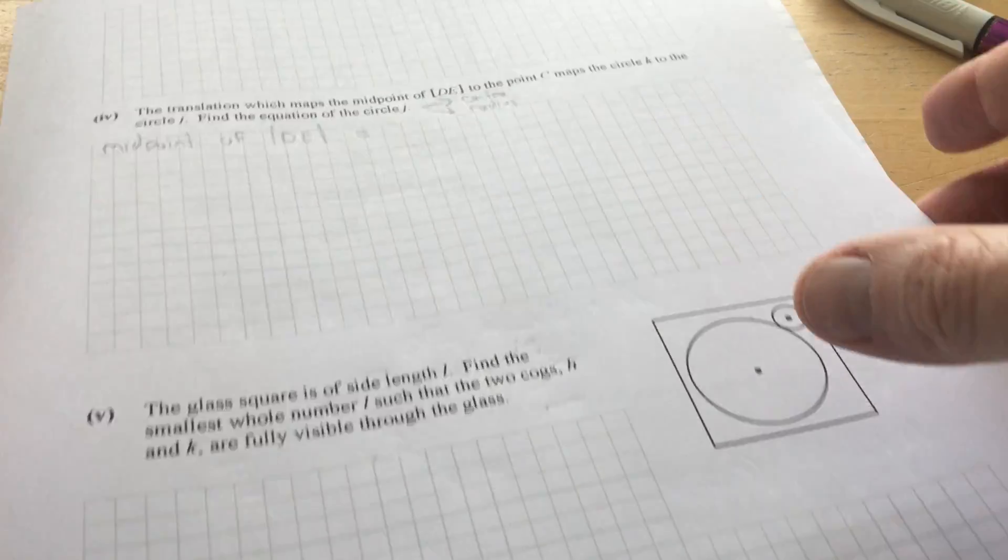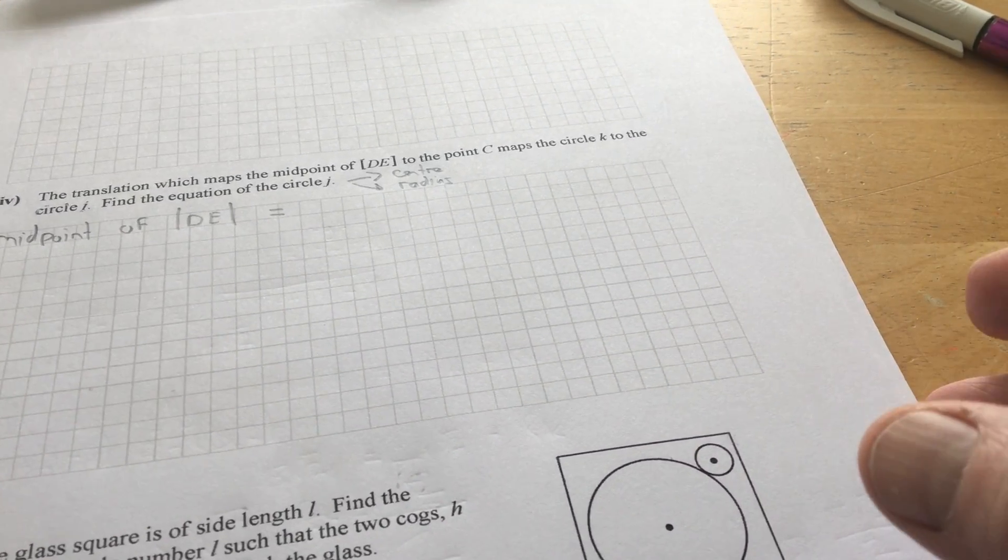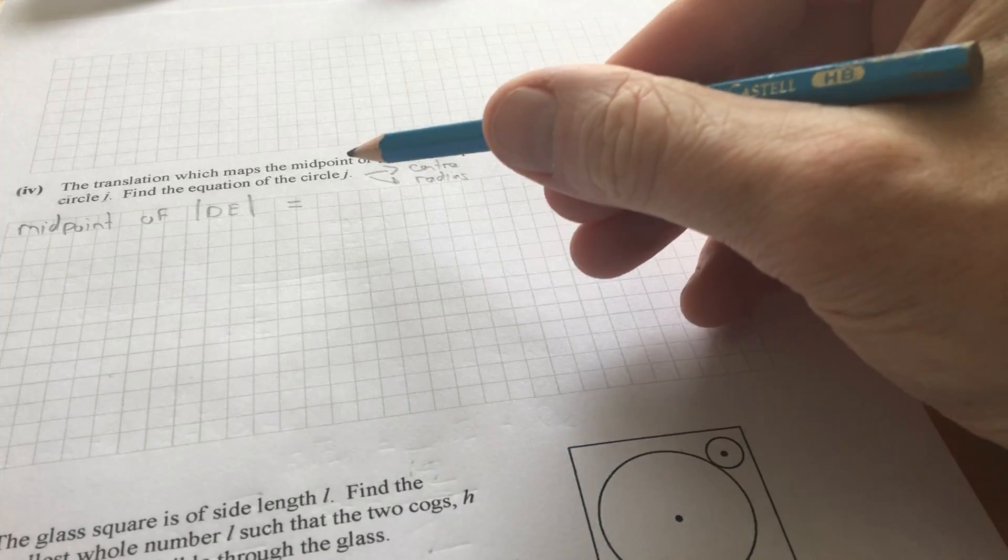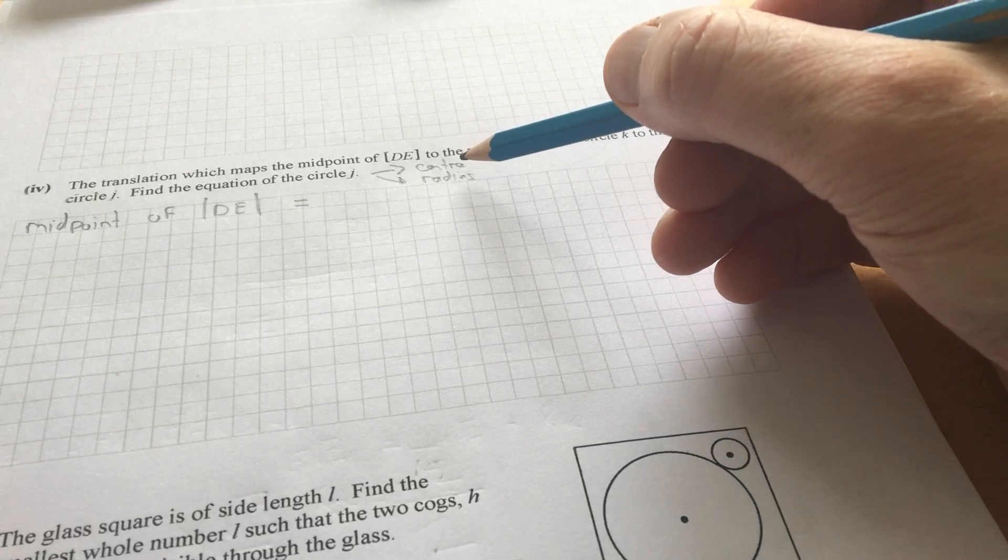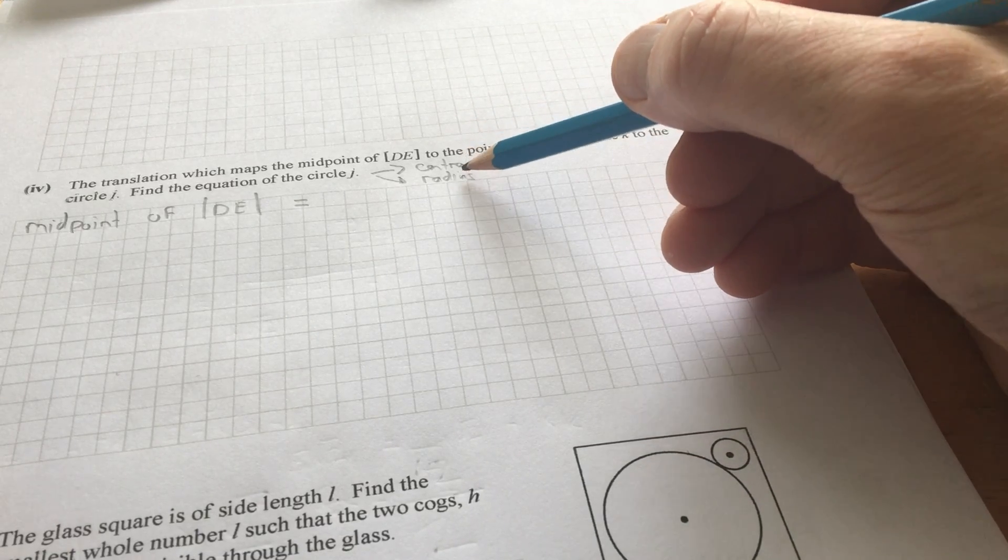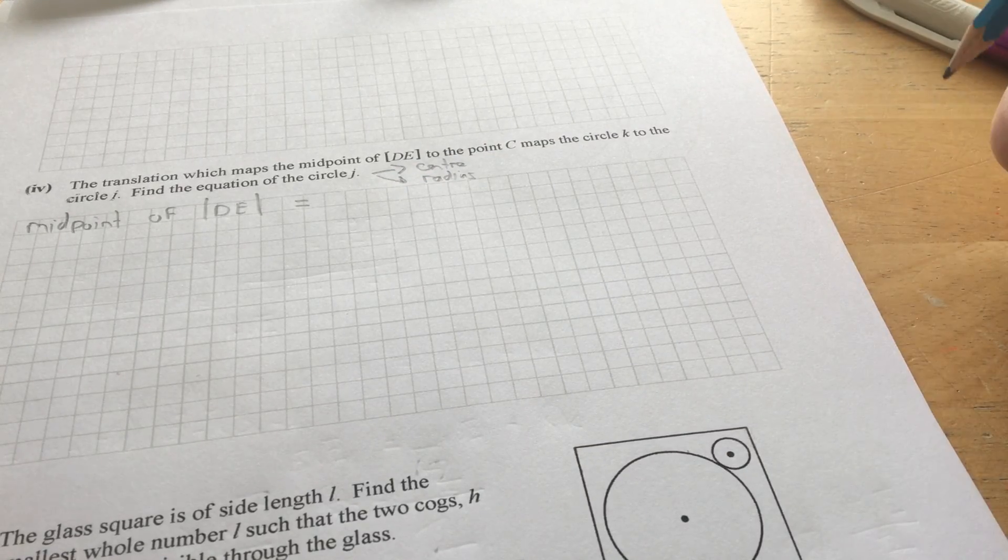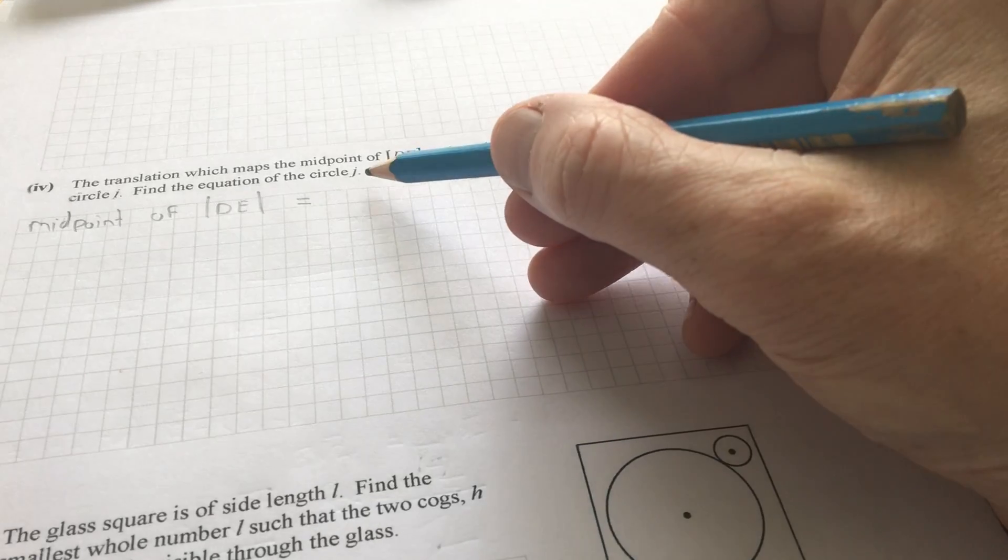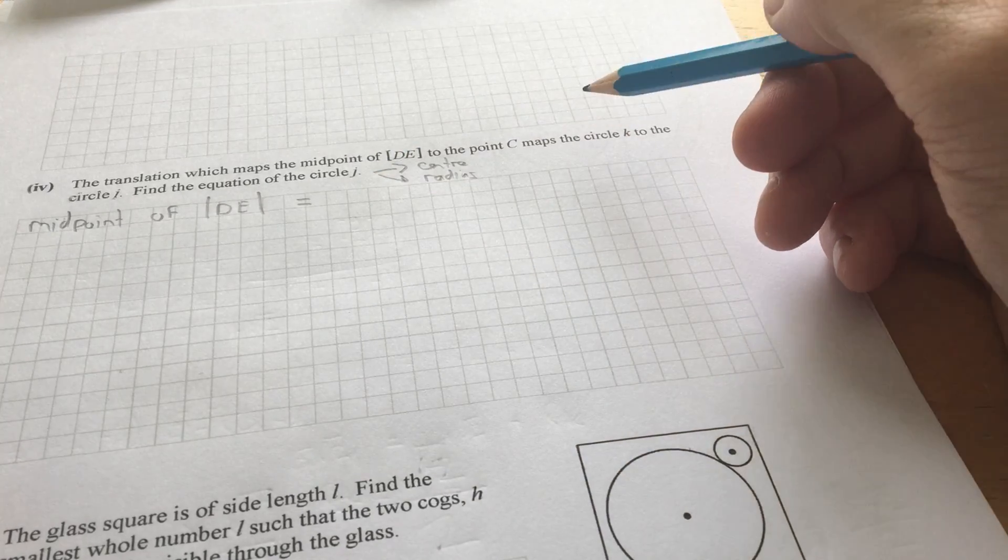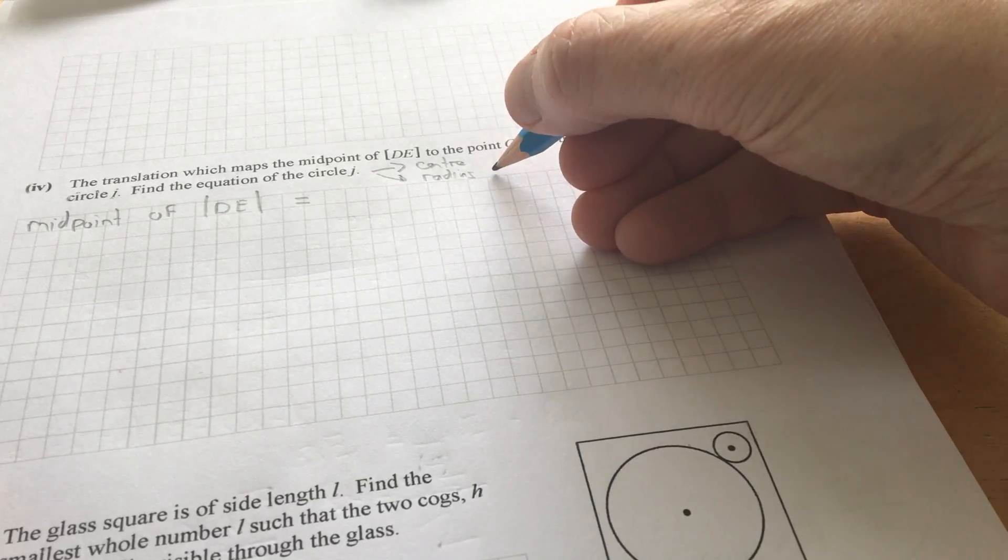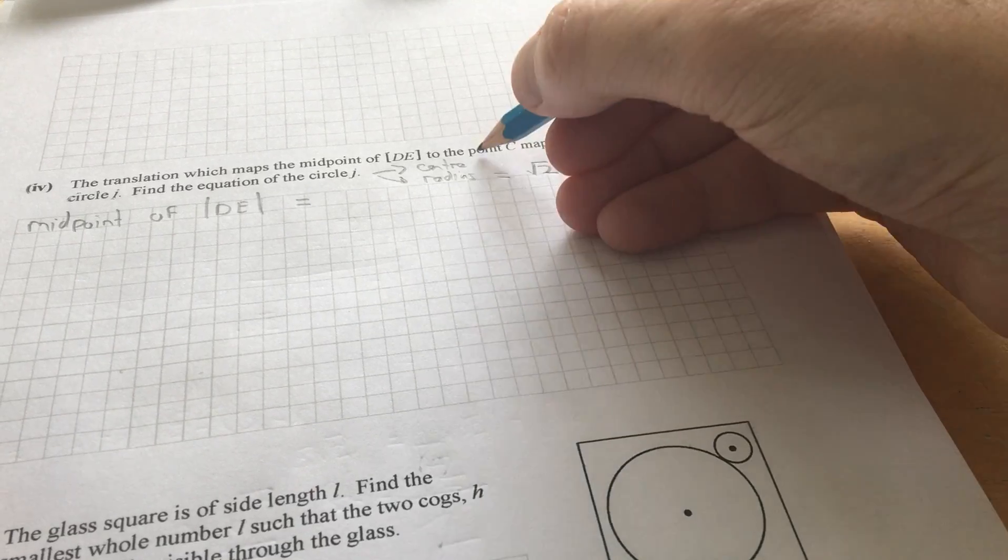And if we continue on here now, the next part, the translation. Sorry, there's a little bit of extra space there. Instead of cramming it all in, I could have used that. So, the translation, which maps the midpoint of D to the point C, maps the circle K to the circle J. Find the equation of the circle J. So, to find the equation of any circle, we need the center and we need the radius. It's a translation. So, the radius should be the same. So, the radius of the circle J will be the same as the radius of the circle K. And the radius of the circle K, as we found in the first or an earlier part, is root 2.